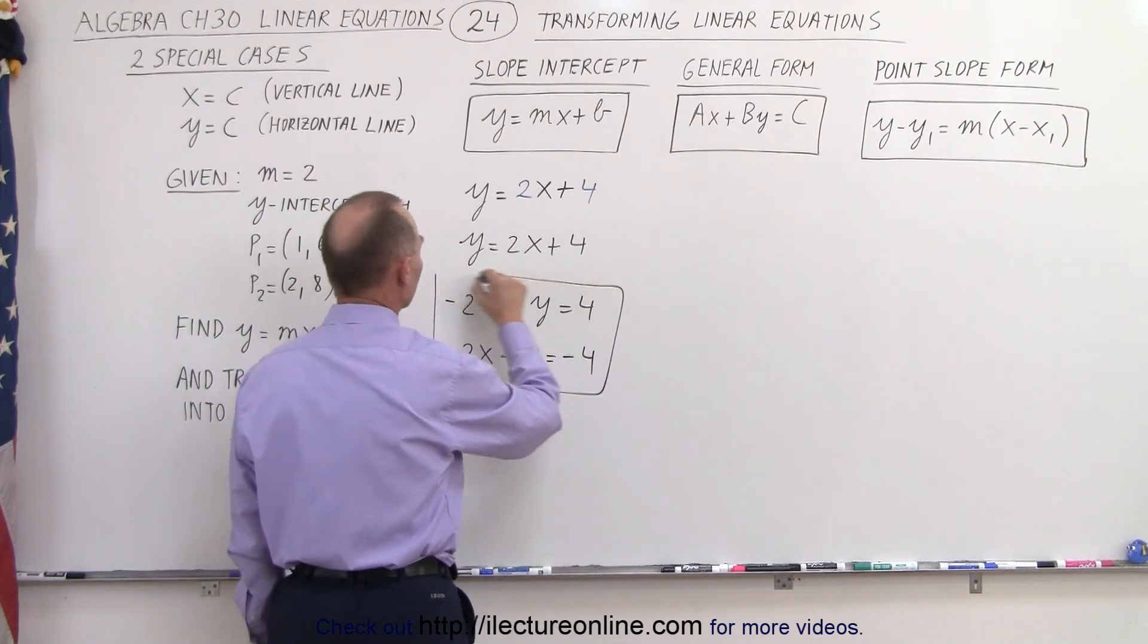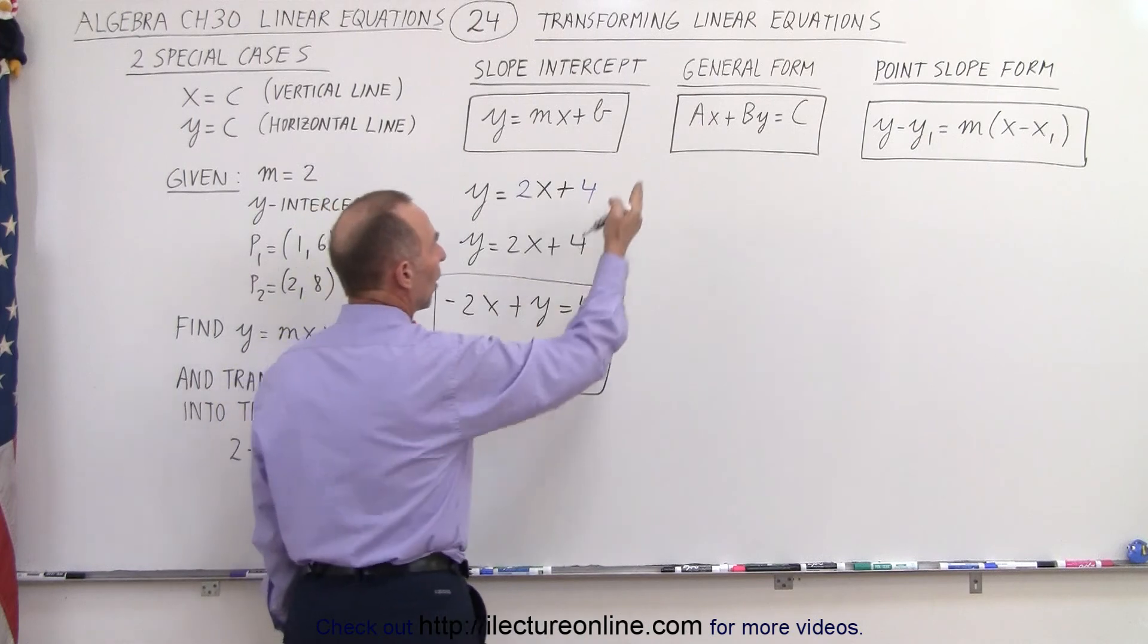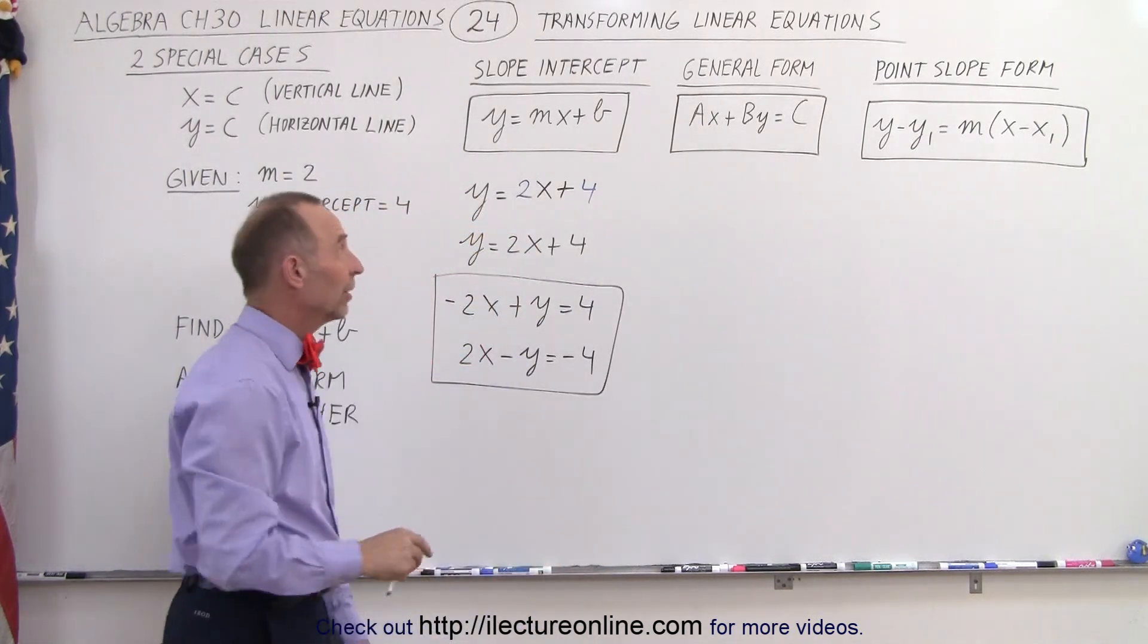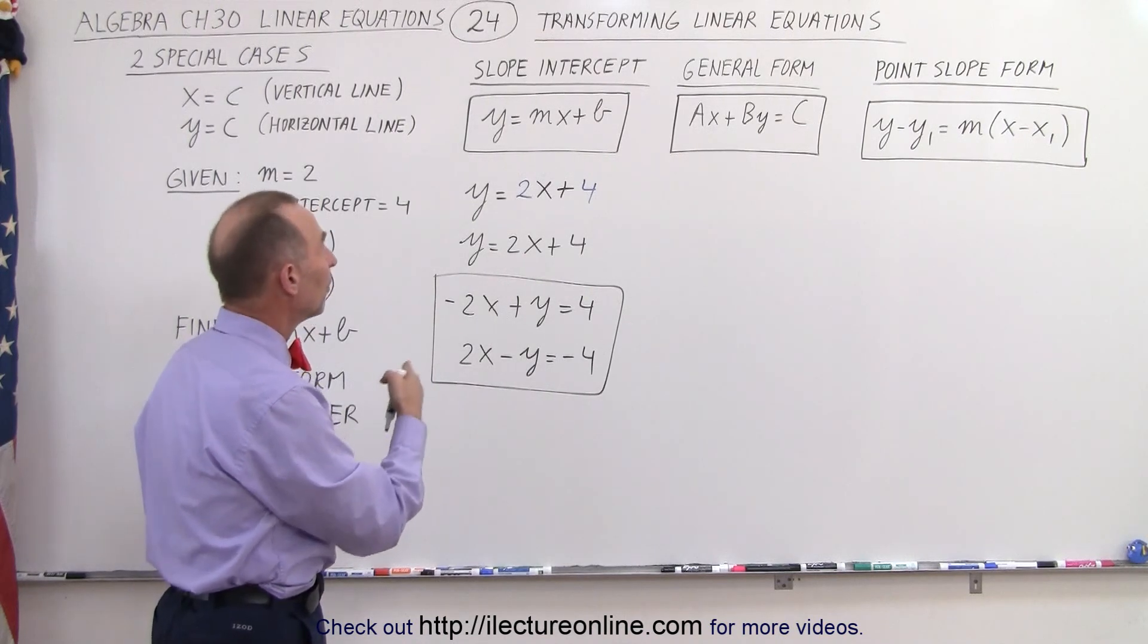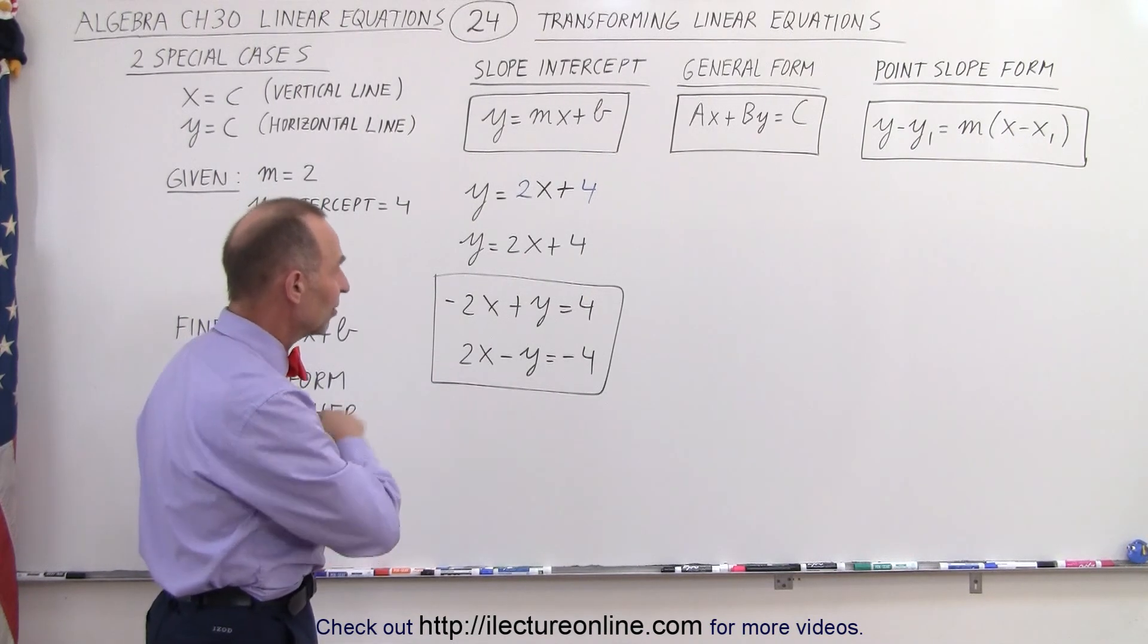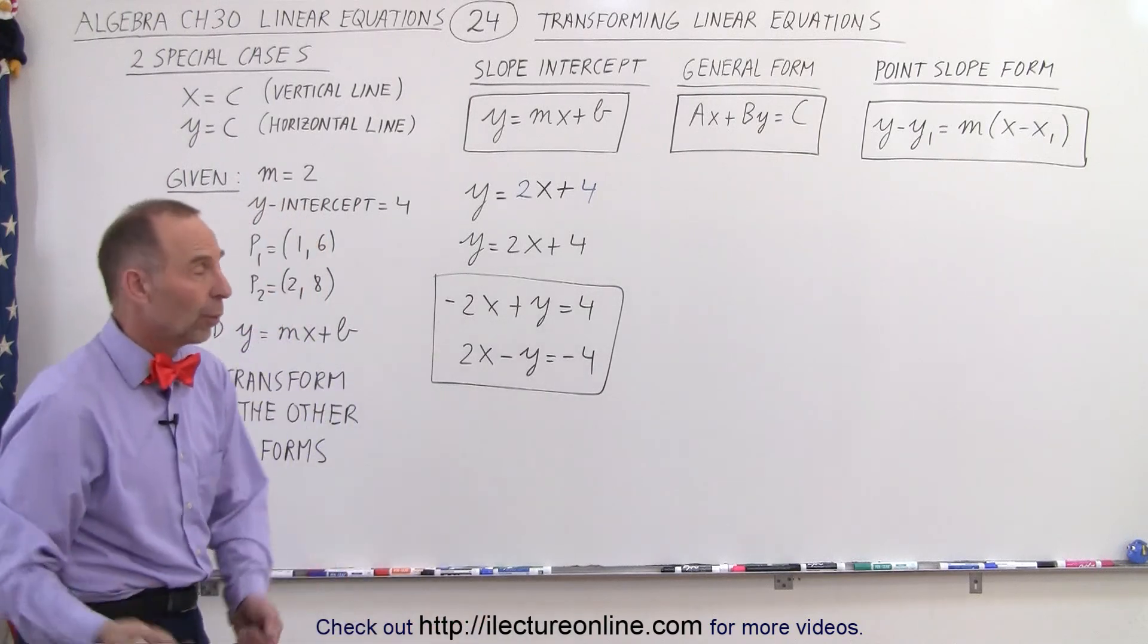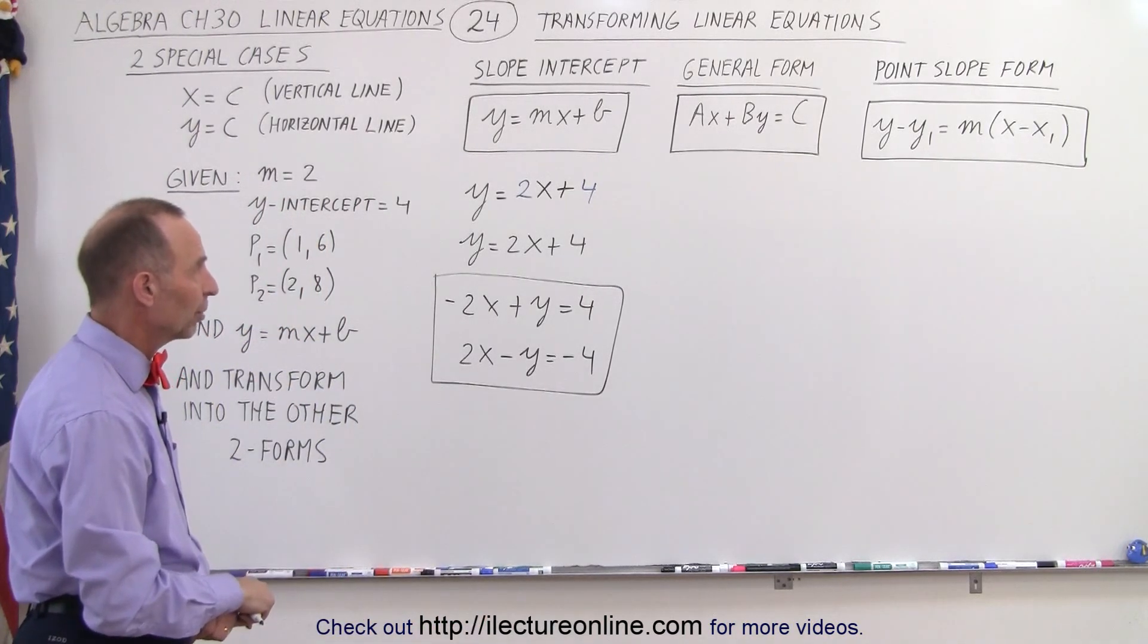Either equation is the appropriate form of the general form. So either a is negative 2, b is 1, and c is 4, or a is 2, b is negative 1, and c is negative 4. It doesn't matter. Either one will match that particular form.